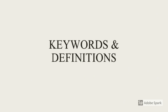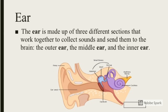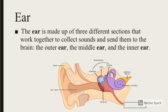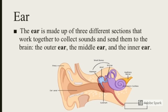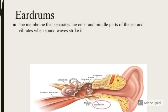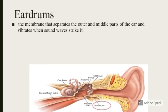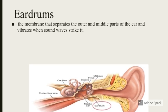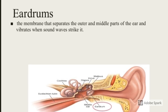Key words and definitions. Ear: the ear is made up of three different sections that work together to collect sounds and send them to the brain — the outer ear, the middle ear, and the inner ear. Eardrums: the membrane that separates the outer and middle parts of the ear and vibrates when sound waves strike it.